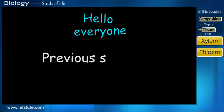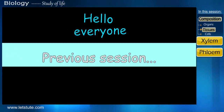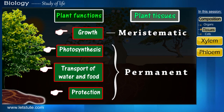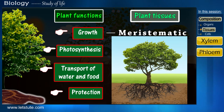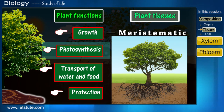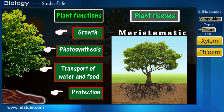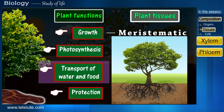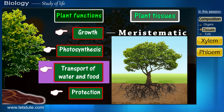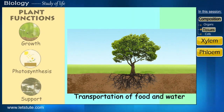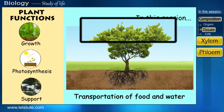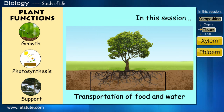Hello everyone. Previously in the chapter of plant tissues, we have discussed some specialized tissues needed by the plant to carry out functions like growth and photosynthesis. Now, along with these functions, a very important function of the plant is the circulation or transport of food and water to all the parts of the plant, which includes even the highest or lowest part of that plant.